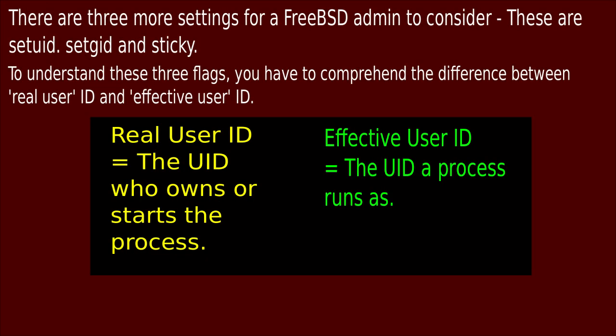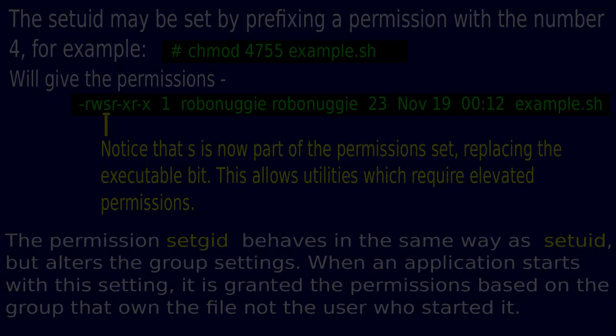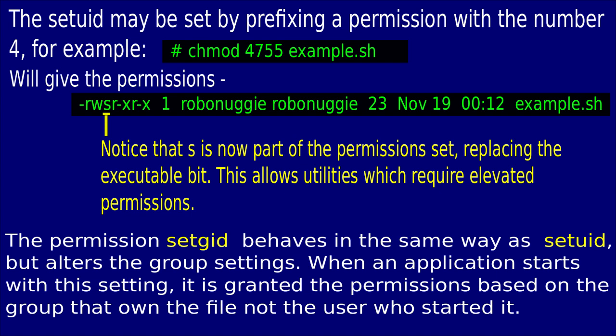There are three more settings for a FreeBSD admin to consider: set UID, set GID, and sticky. To understand these three flags, you have to comprehend the difference between real user ID and effective user ID. The real user ID is the user ID who owns or starts the process. The effective user ID is the user ID that the process runs at. The set UID may be set by prefixing a permission with the number 4 — for example, chmod 4755. Notice that S is now part of the permission set, replacing the executable bit.